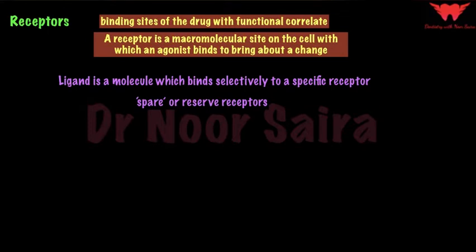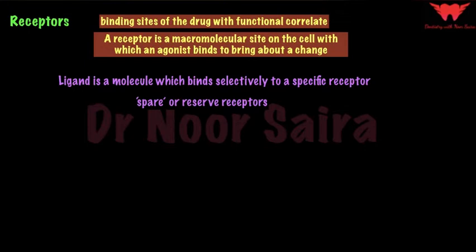An agonist is a material that will come and bind to the receptor and bring about a change — either increase or decrease. When an antagonist comes and binds to the receptor, there is competition between the agonist and antagonist for the same receptor. An antagonist will bind to the receptor and not bring about any change, but when you give higher concentrations of agonist even in the presence of an antagonist, there will be a change because of hidden or reserve receptors present elsewhere — those are called spare or reserve receptors.